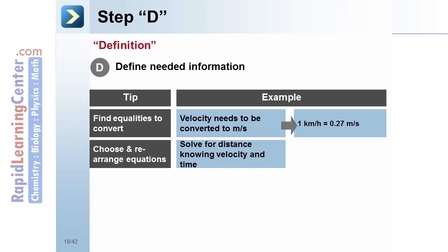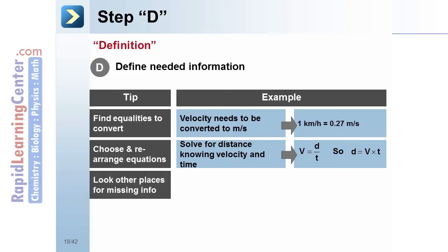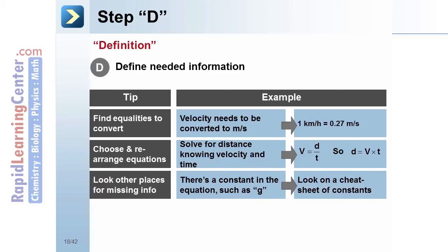We may need to do some algebraic rearranging, say, changing our velocity formula solved for V into a distance formula solved for D. And we also might need constants, such as the acceleration from gravity, G.